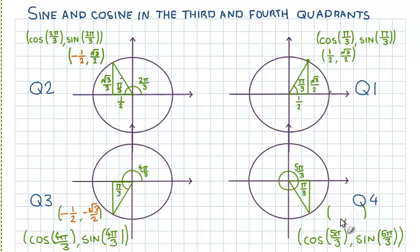And if we write them in absolute terms, the x coordinate is +1/2 because we're on the right hand side of the y axis and the y coordinate is -√3/2 because we're below the x axis. So -√3/2.